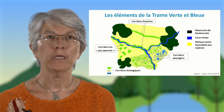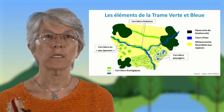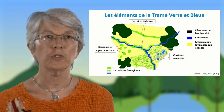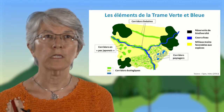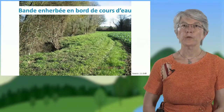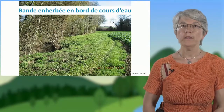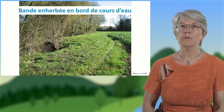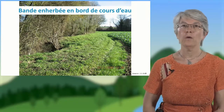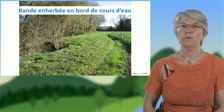La nouveauté dans la politique trame verte et bleue, c'est que ces réservoirs doivent être reliés par des corridors écologiques qui permettent le déplacement des espèces et assurent la viabilité durable des populations. Les corridors écologiques peuvent être de plusieurs types. Le premier type, comme c'est le cas ici pour des bandes enherbées et des ripisylves en bord de cours d'eau, où les espèces de milieux boisés et de milieux ouverts peuvent se déplacer.